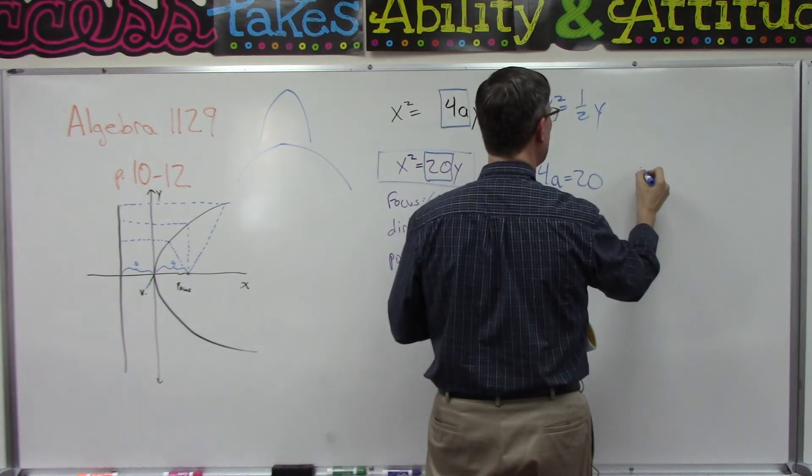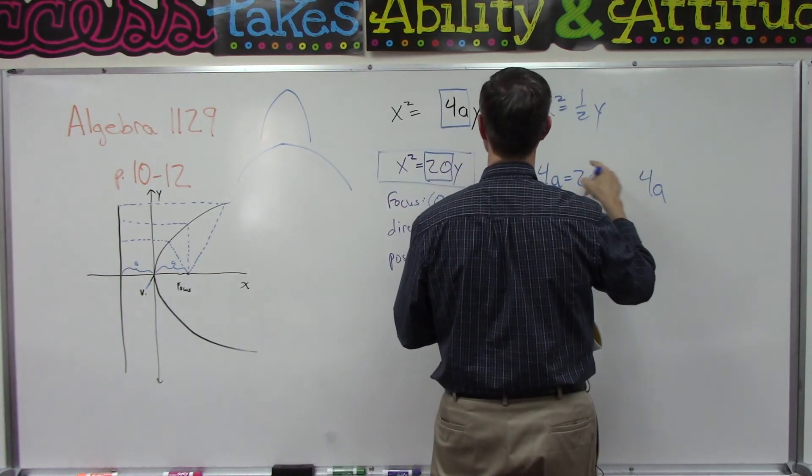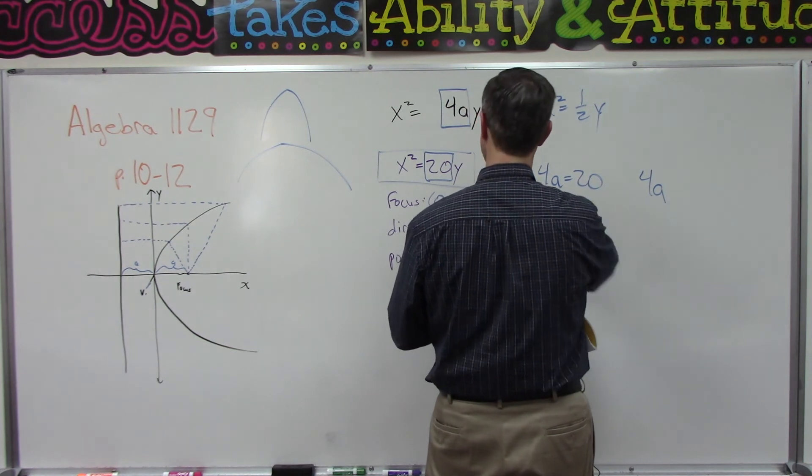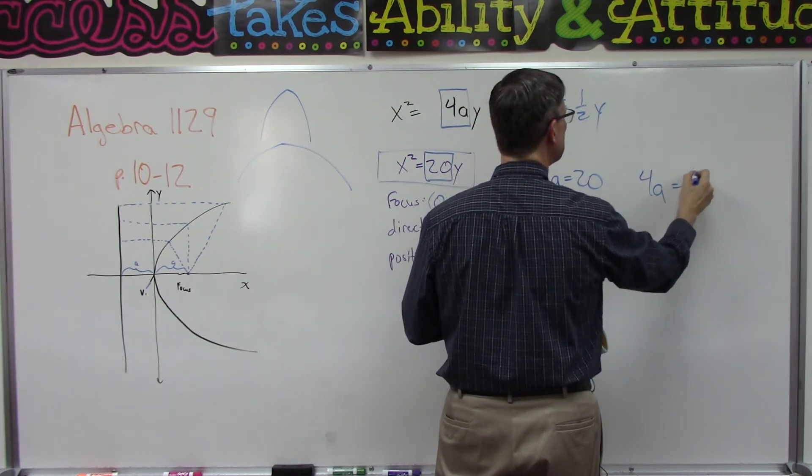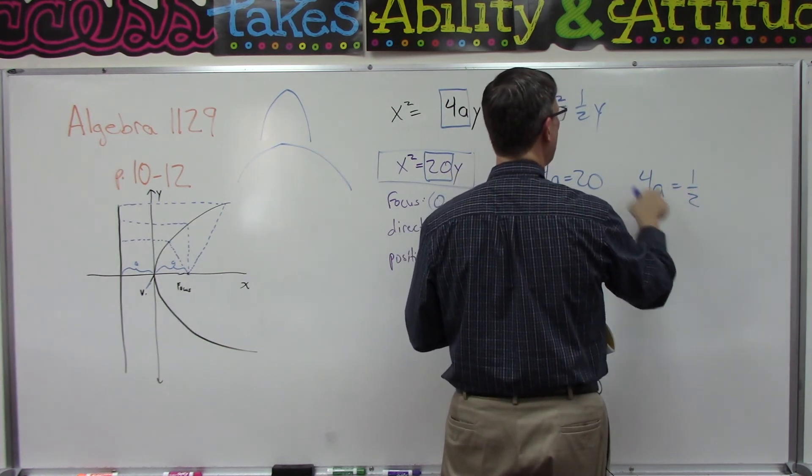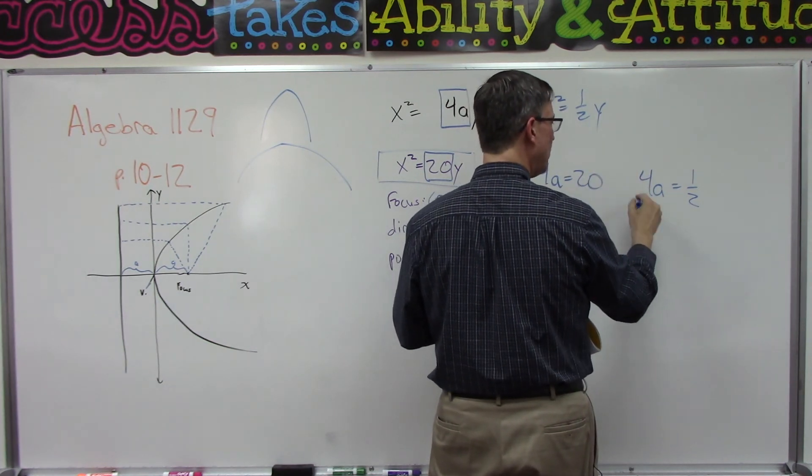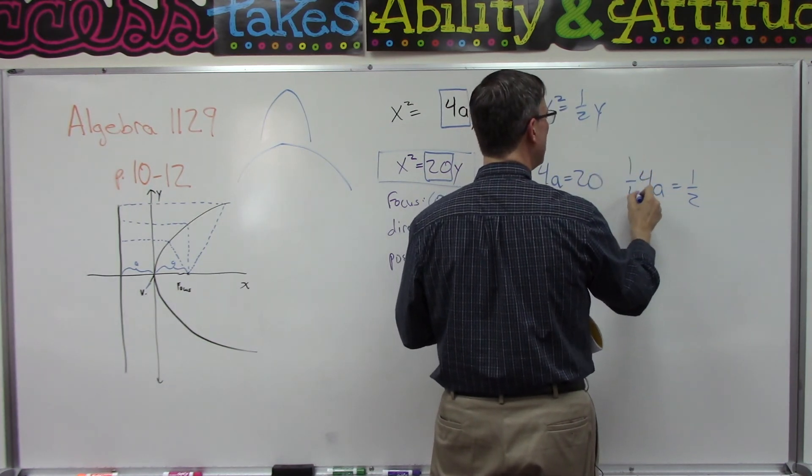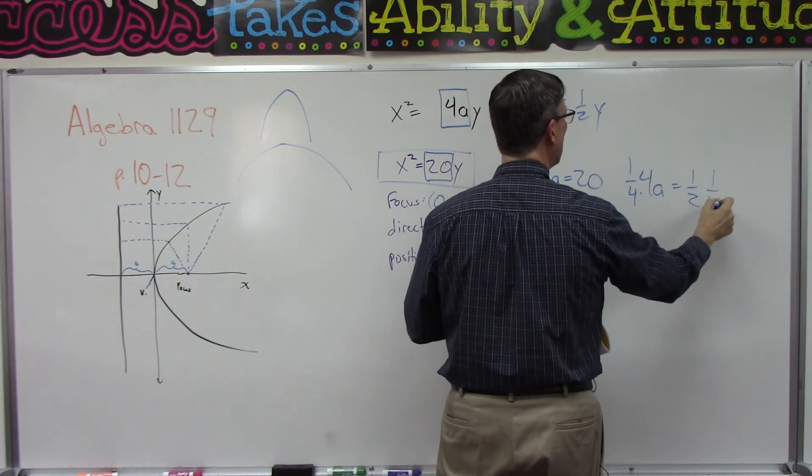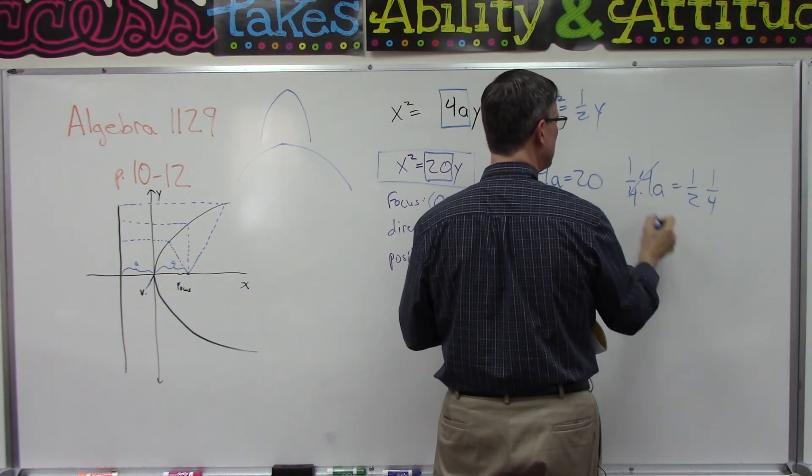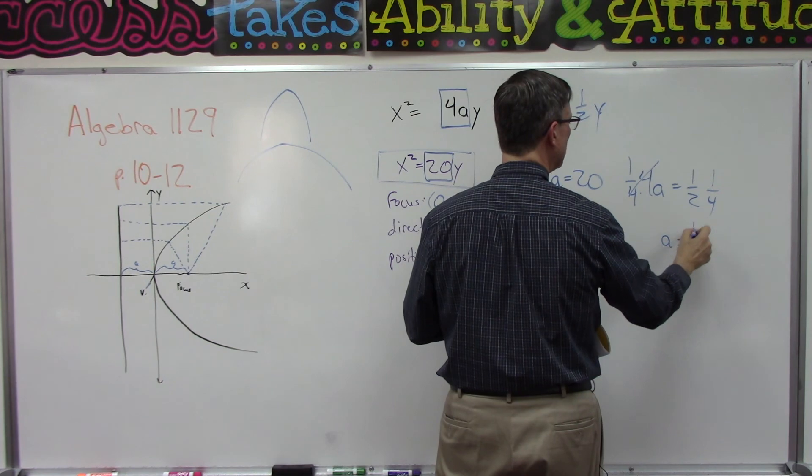We need to figure out what a would be. So we're going to take the 4a, and this time instead of having it equal to 20 like we did in this problem, we have to set it equal to one half. But we still have to solve for a. How do we do that? We're going to multiply both sides by one fourth and that will cancel, so a equals the fraction one eighth.